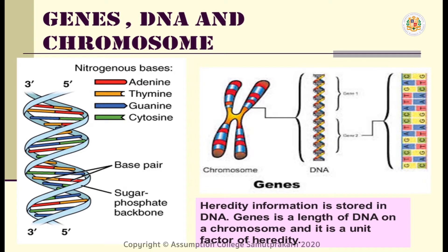Remember that in pairing nitrogen bases, each is specifically attached to a specific type of nitrogen base. For example, adenine can only be attached next to a thymine — adenine cannot be attached to a guanine. Similarly, guanine is also attached to cytosine, and not to any other base.